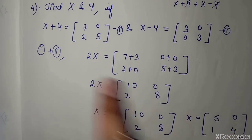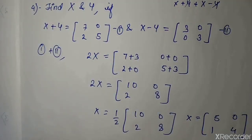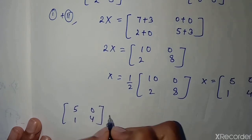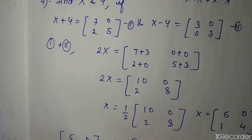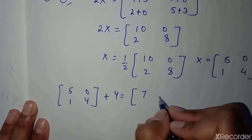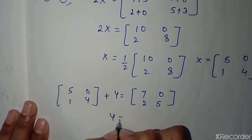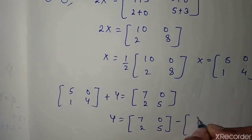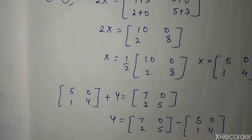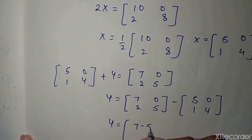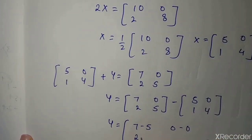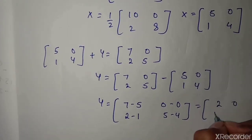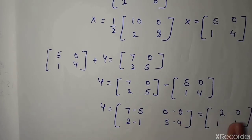Now to find Y, substitute X into equation 1. X plus Y equals [7, 0, 2, 5], and X is [5, 0, 1, 4], so Y equals [7, 0, 2, 5] minus [5, 0, 1, 4]. Subtracting element by element: 7 minus 5 is 2, 0 minus 0 is 0, 2 minus 1 is 1, 5 minus 4 is 1. So Y equals [2, 0, 1, 1]. Both values have been found.